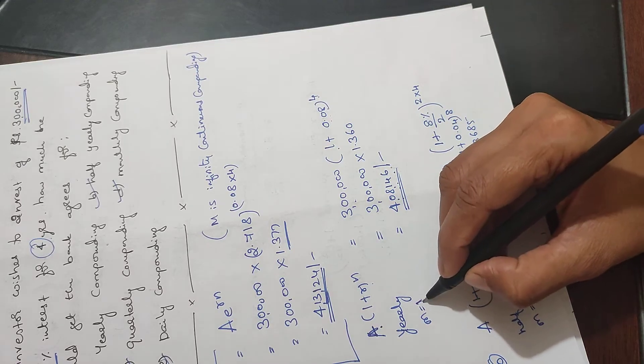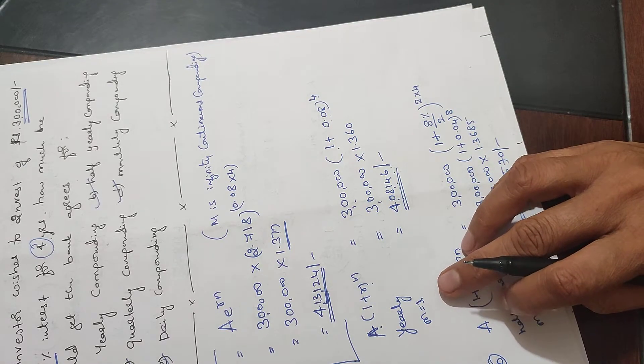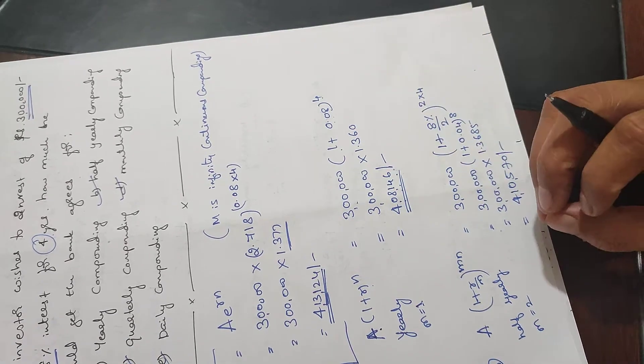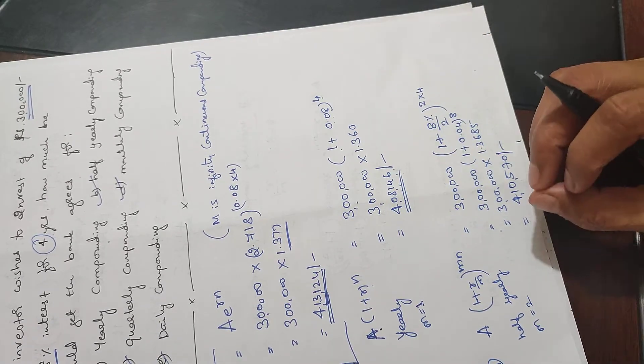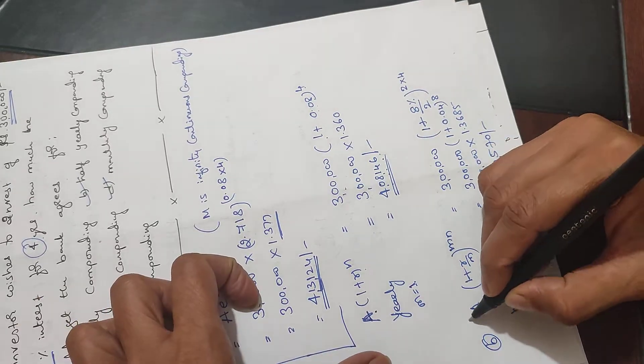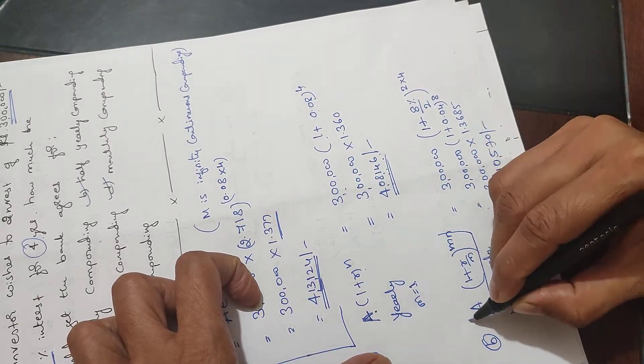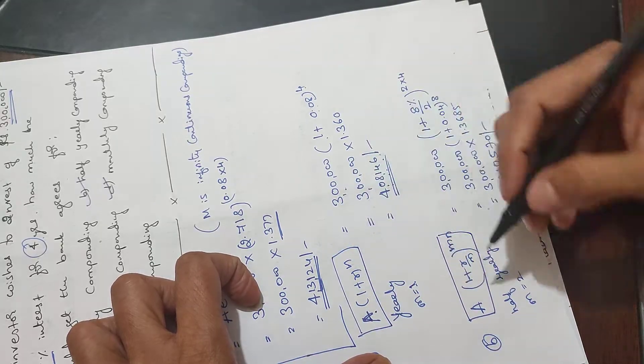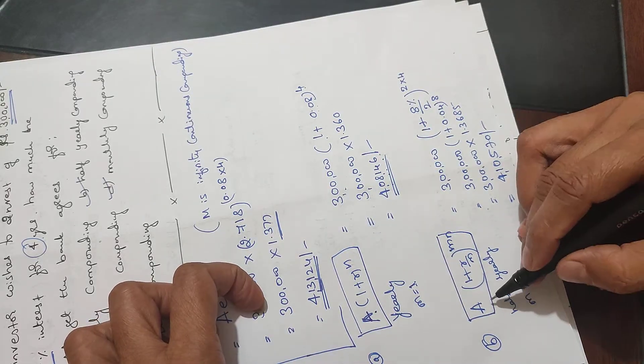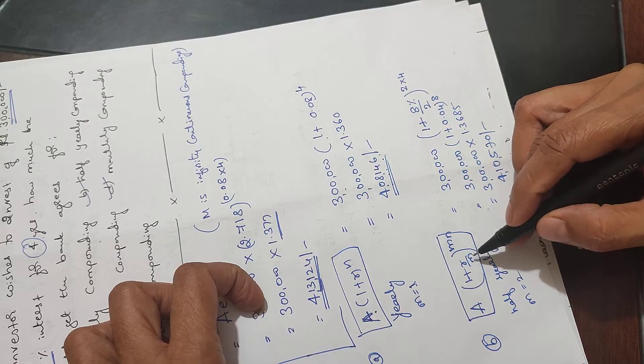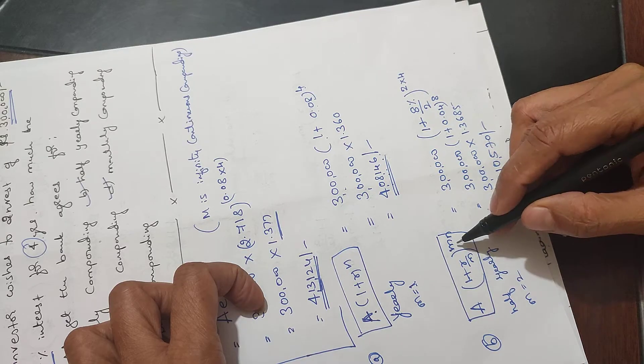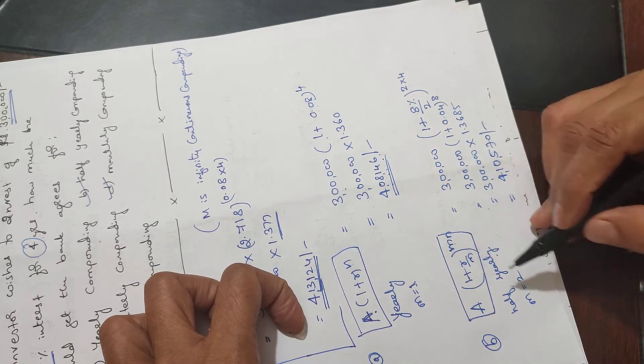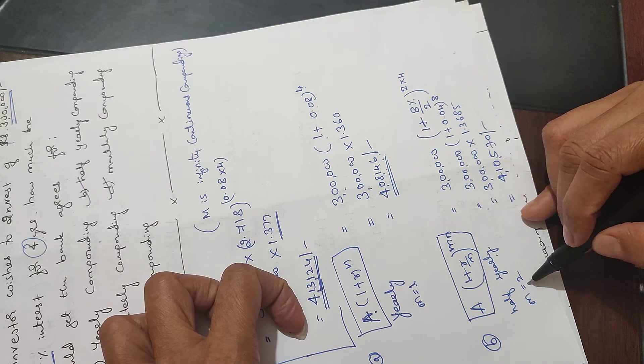M equals 1 for yearly. In case of half-yearly, quarterly, we need to modify the formula. For half-yearly, it becomes A into 1 plus R divided by M, whole bracket raised to MN. For half-yearly, M equals 2.